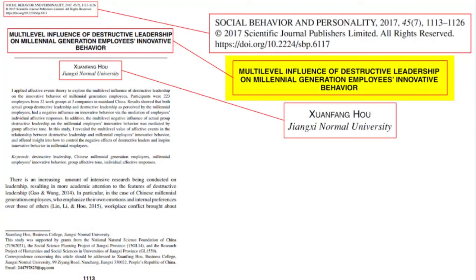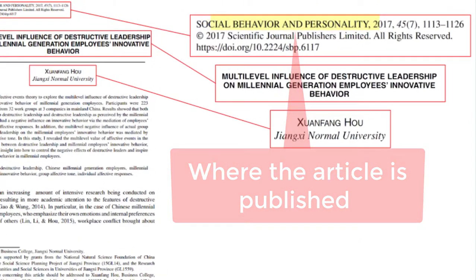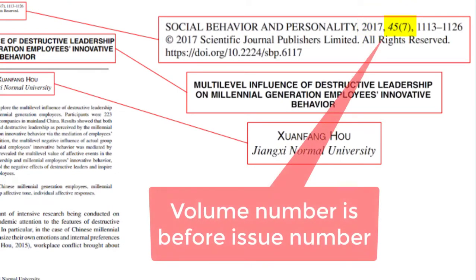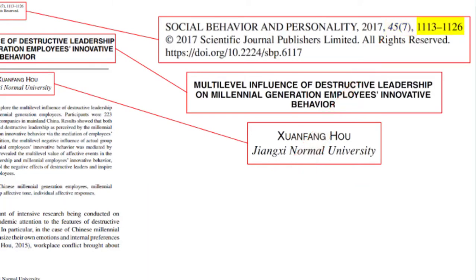You'll need the title of the article and the author. Other information you need is typically found at the top or at the bottom of the article. You'll see the journal title — this is the name of the journal where the article is published. You'll see the year of publication and the volume and issue numbers, which show exactly when the article was published. The volume always comes before the issue number, and sometimes there is no issue number. You'll also need to include the page numbers and the DOI if your article has one.